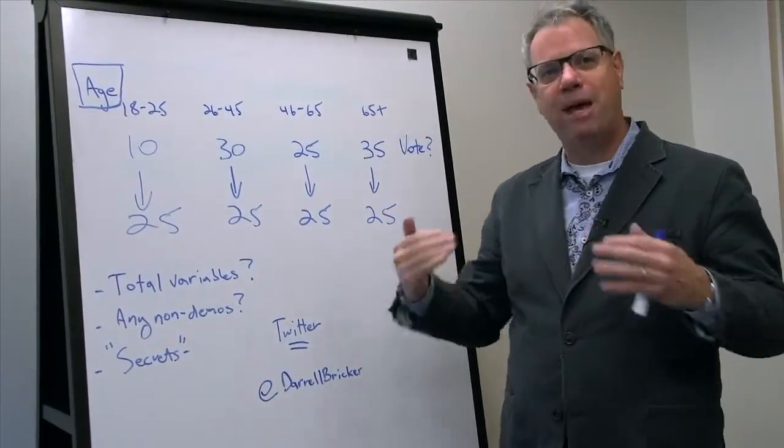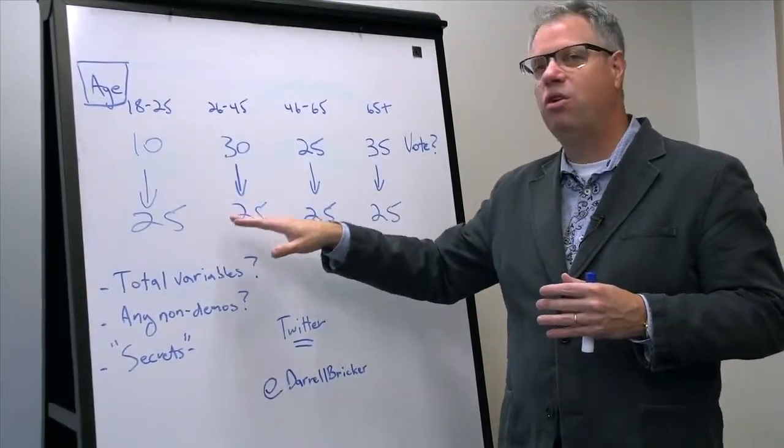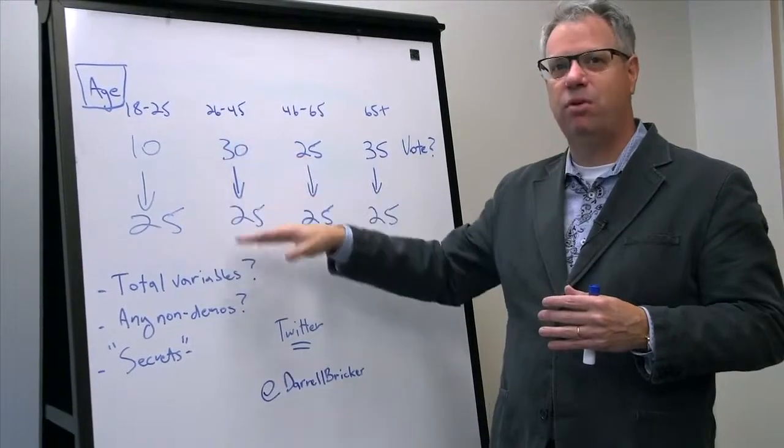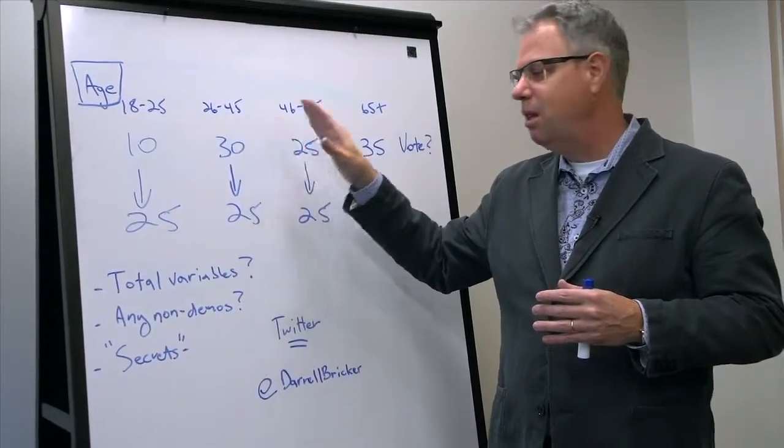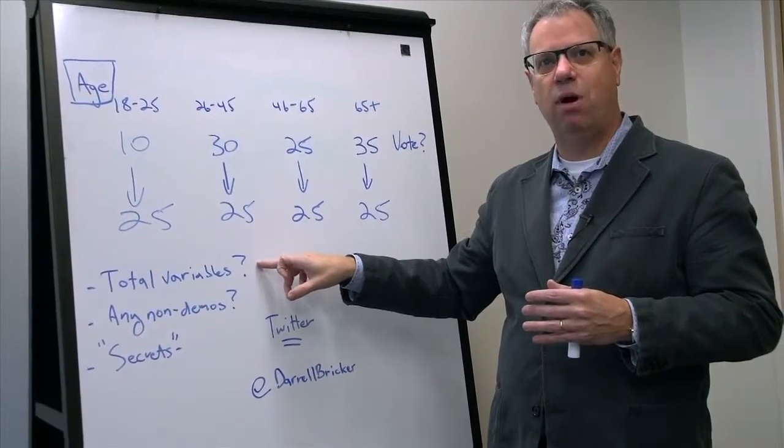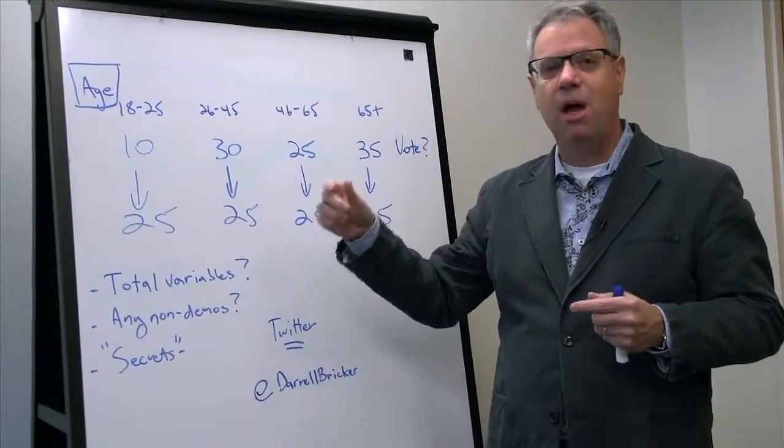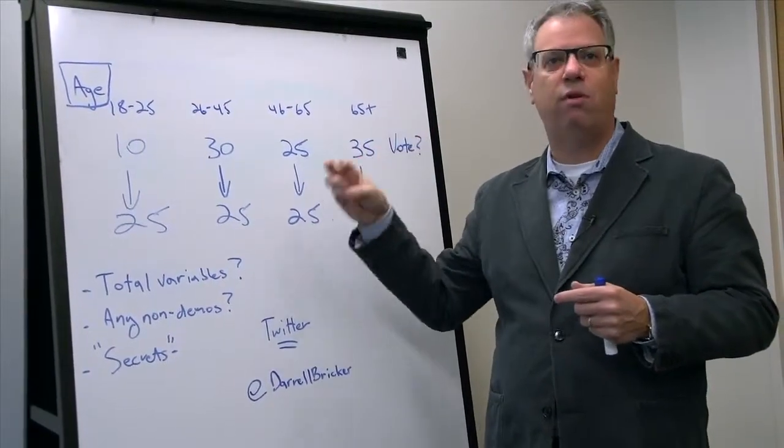That's why I keep banging on if you follow me on Twitter about show me your unweighted data. Show me your weighted data. I want to see how you've made those adjustments. The next thing is, I want to know how many different variables you did that for. I want to know if you did it for gender. I want to know if you did it for income. I want to know if you did it for age. I want to know if you did it for education.